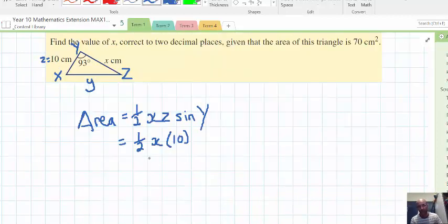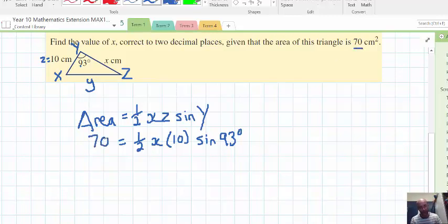So, it's half. We've got half of X times 10 times sine Y. Sine Y, well, Y is 93. Subbing the values in, in other words. And, area's given as we said 70. So, and we're working in centimeters or centimeters squared. Now we've just got to rearrange. And, we're in business here.